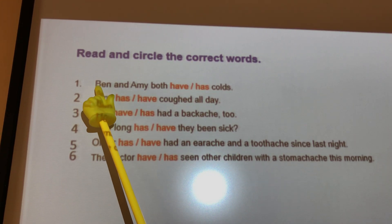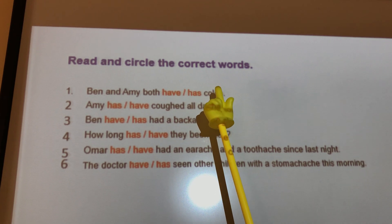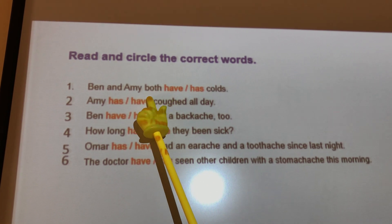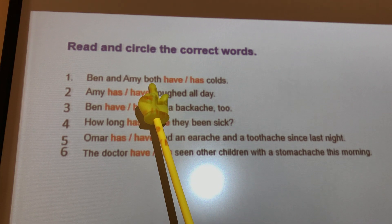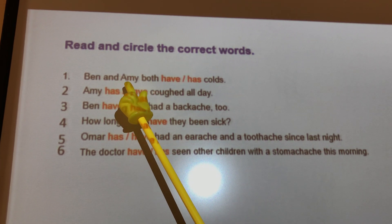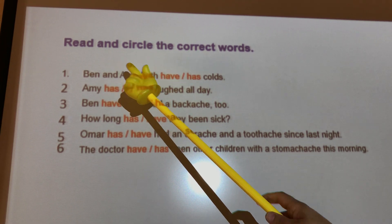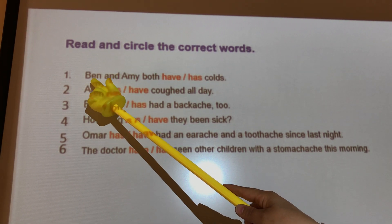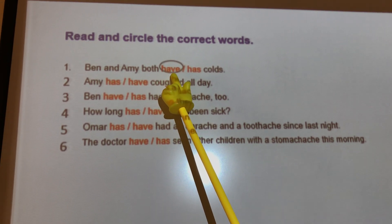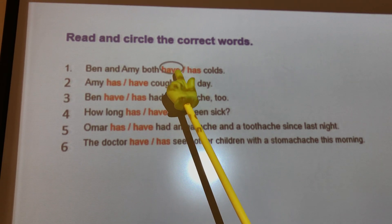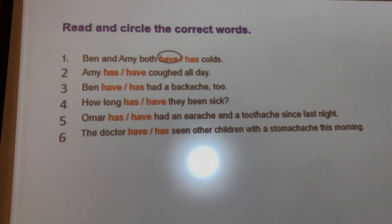Look at number 1: 'Ben and Emmy both have or has colds?' Be careful — they write 'both' here. Both means two, so they are more than one. When I say 'Ben and Emmy', it means 'they'. And 'they', as we said before, takes 'have'. Now, can you do the other sentences? Go ahead.